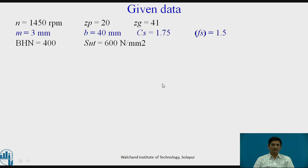The given data in the problem: input speed is 1450 rpm, Zp number of teeth on pinion equals 20, Zg number of teeth on gear are 41, module M equals 3 mm, face width B equals 40 mm, service factor Cs equals 1.75, factor of safety is 1.5, surface hardness BHN equals 400, SUT of the material equals 600 N/mm². With this available data, we need to calculate what is the rated power that the gear pair can transmit.